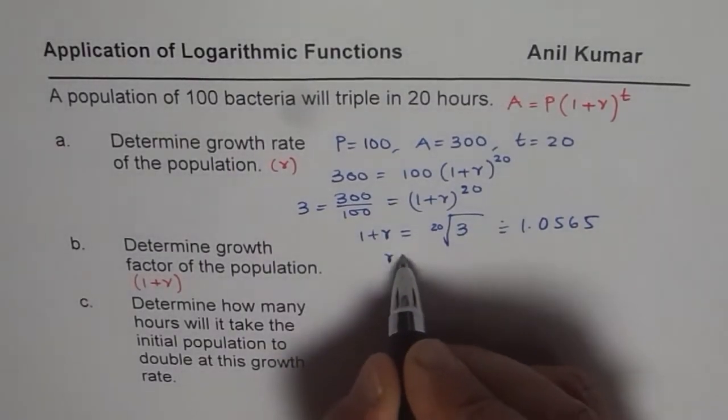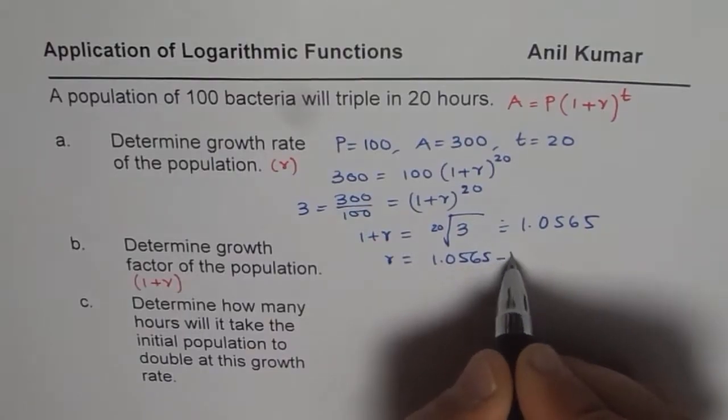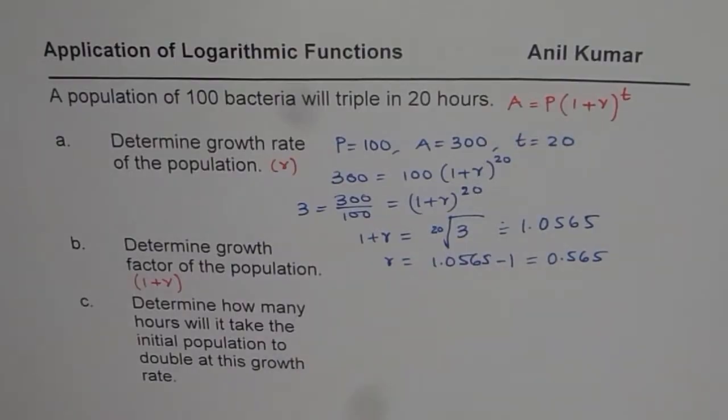Approximately 1 plus r is 1.0565. And rearranging, we can write r equals 1.0565 minus 1, which is 0.0565. So we get the value of r.